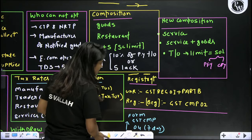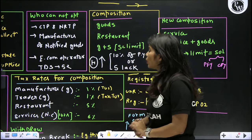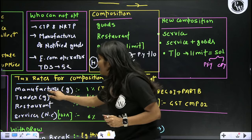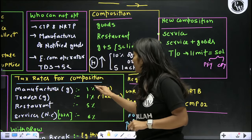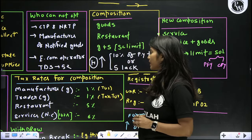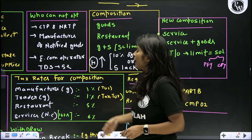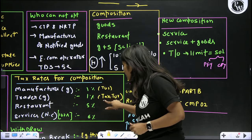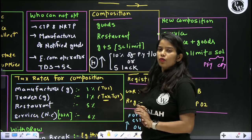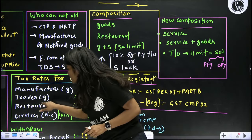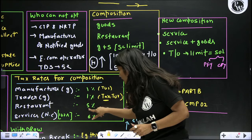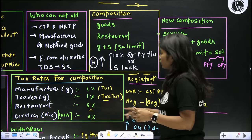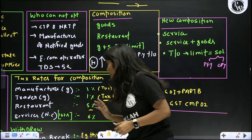If you opt into the Composition Scheme, the applicable tax rates are: for a manufacturer of goods — 1% on total turnover; for a trader of goods — 1% but on taxable turnover; for a restaurant service provider — 5%; and for service providers under the new composition category — 6%.